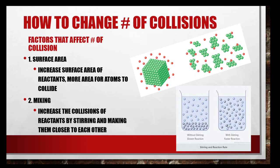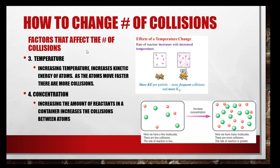But when we stir it, we can actually cause that to happen. You might see this when you're cooking — when you stir it, you see a chemical reaction or things start to mix. Another thing that affects it is temperature. If we increase the temperature, we're going to increase the kinetic energy — remember, that's about how much they move and fly all over the place. If they have more energy, they're going to collide more. We can also change the concentration — increasing the amount of reactants in a container increases the collisions. With more particles, it's more likely that they will collide.